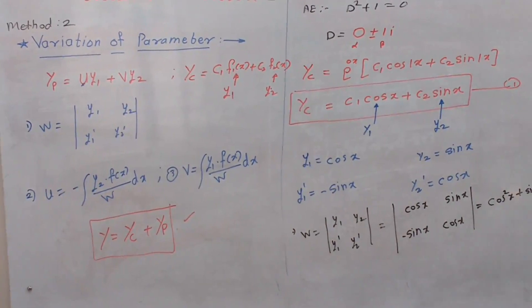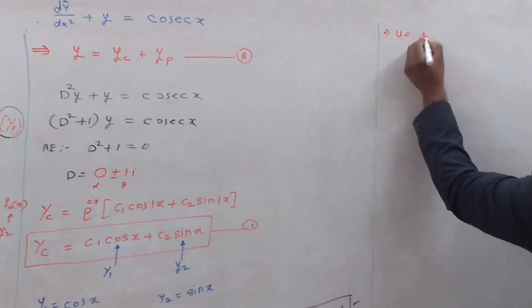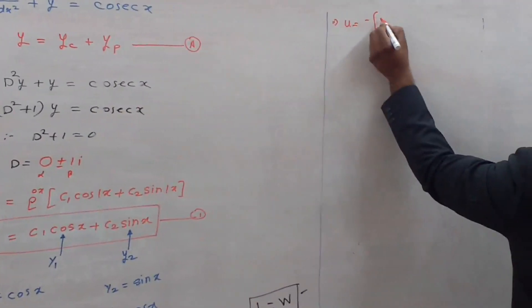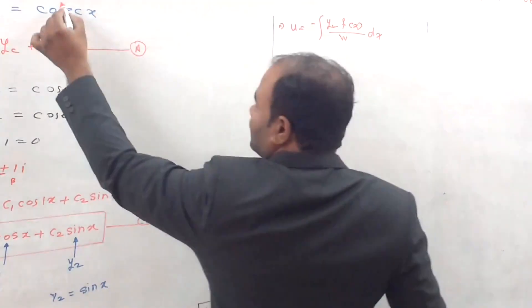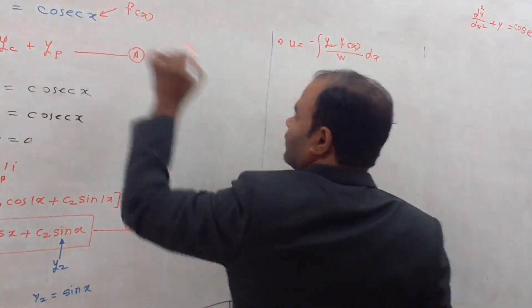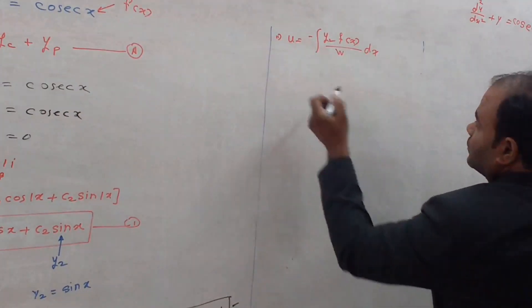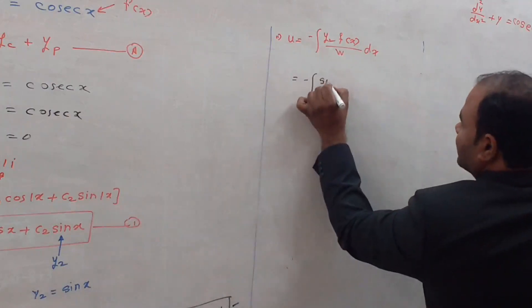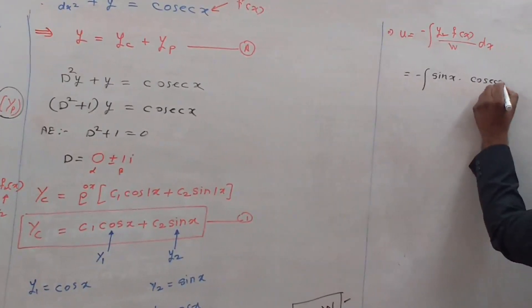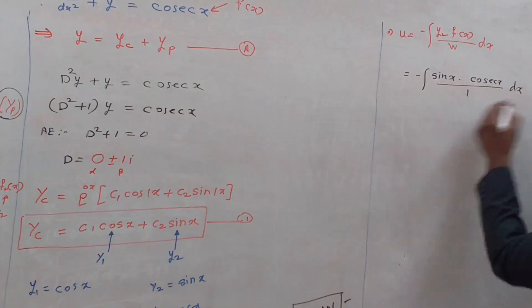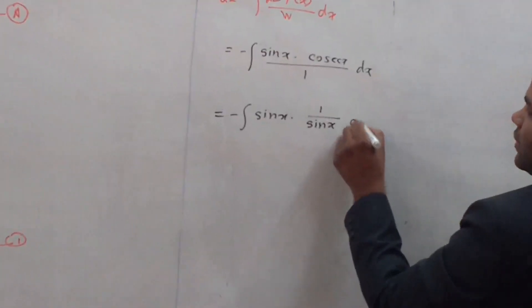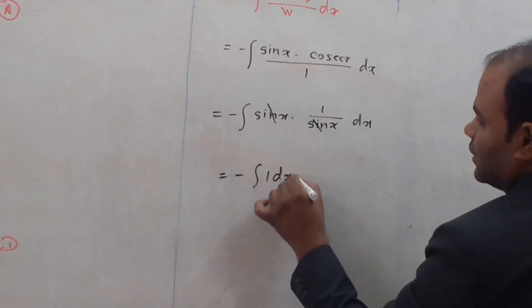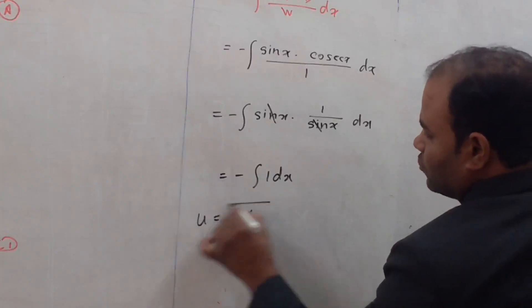Next we find u and v. The standard equation for u is minus of integration of y2·f(x)/w dx. Here f(x) is the right-hand side, which is cosec x. Substituting: u = −∫(sin x · cosec x / 1) dx = −∫(sin x · (1/sin x)) dx = −∫1 dx = −x. So u = −x.